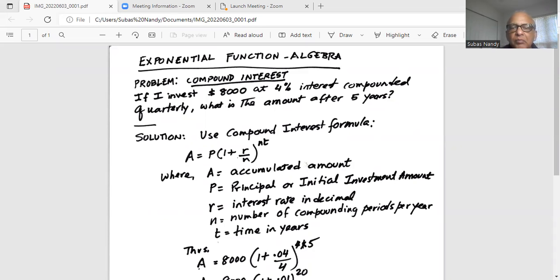The formula for compound interest is A = P(1 + R/n)^(nt). That is why it is an exponential function. Here A is the accumulated amount, P is the principal or initial investment amount, R is the interest rate in decimal, n is the number of compounding periods per year, and t is time in years.